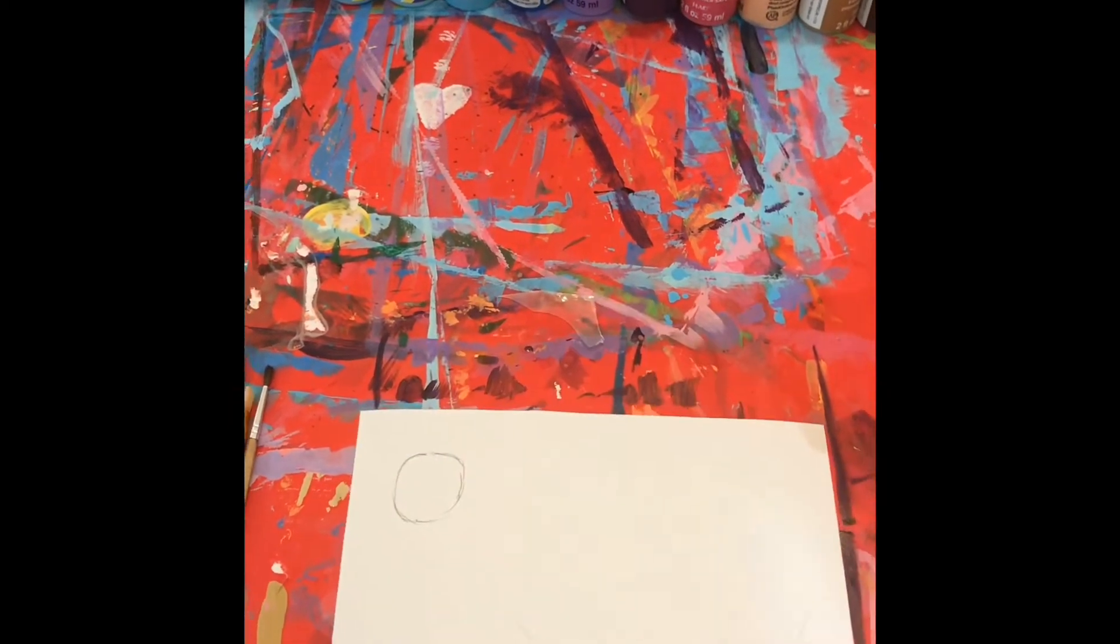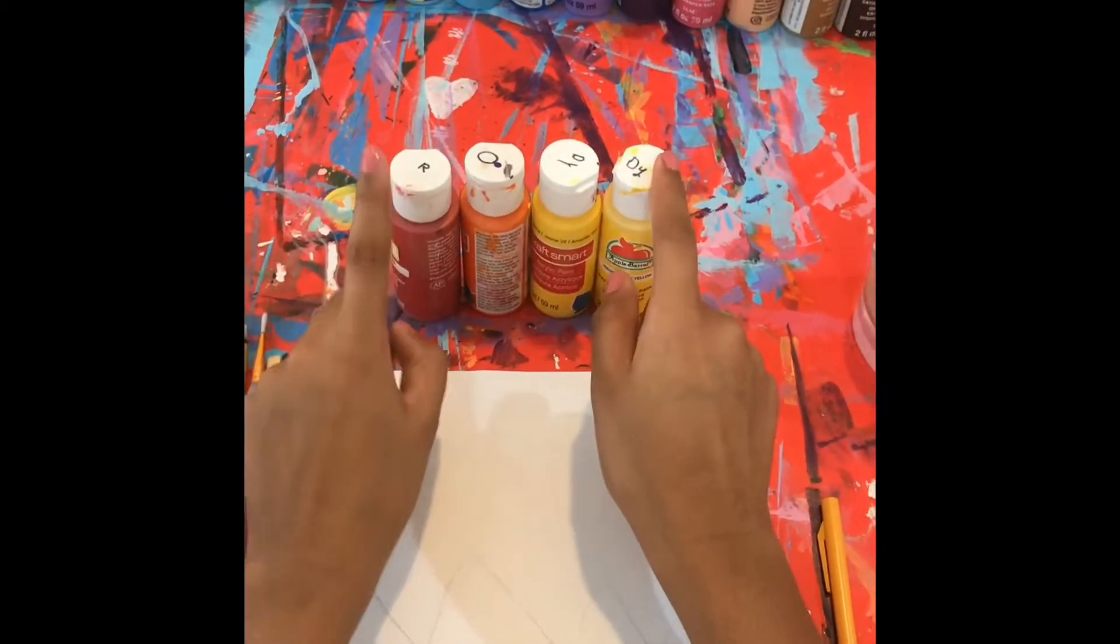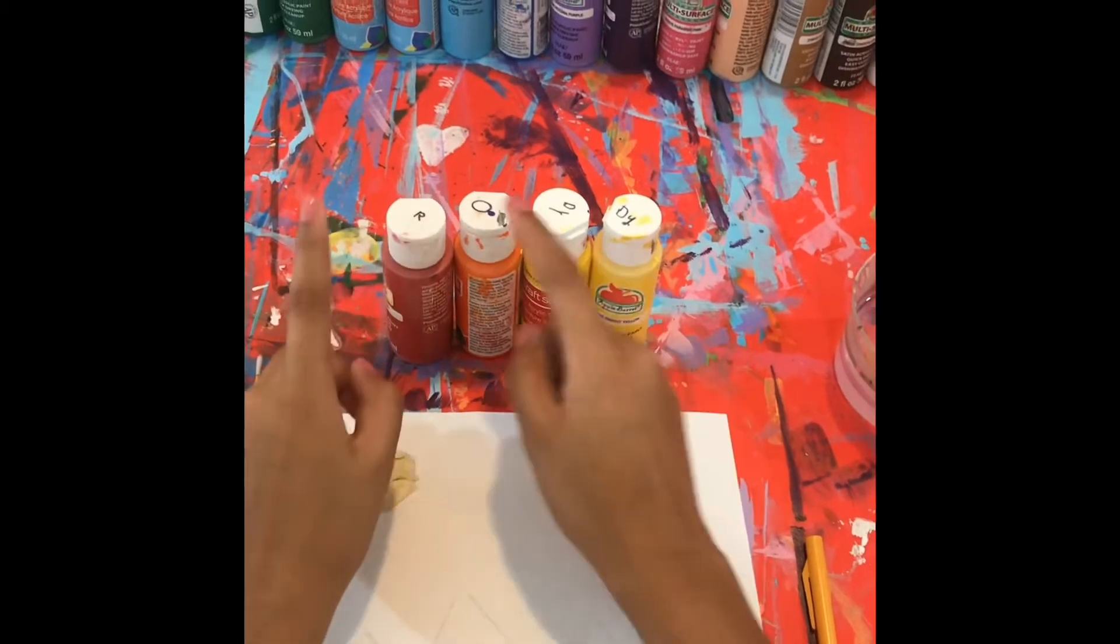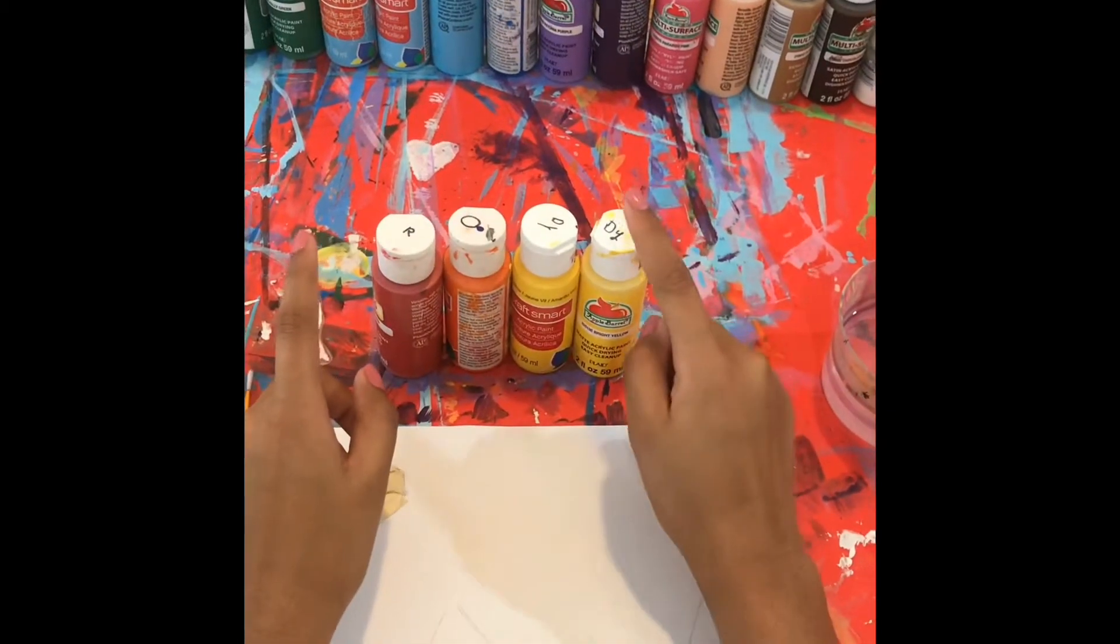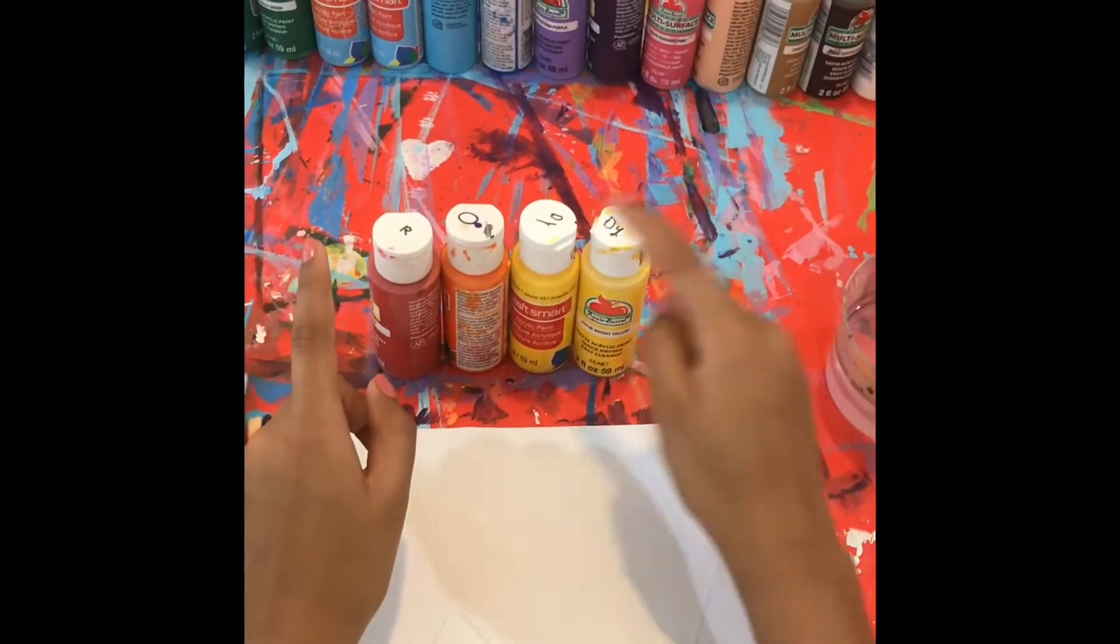After you have the circle, you want to take the tape. We just picked out four colors: a dark red, an orange, a lighter pale yellow, and a bright yellow.